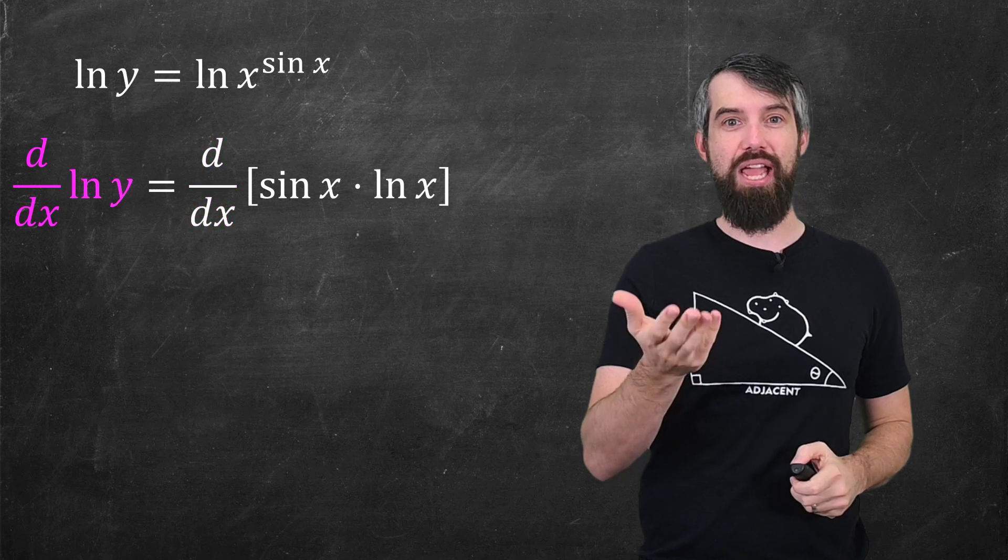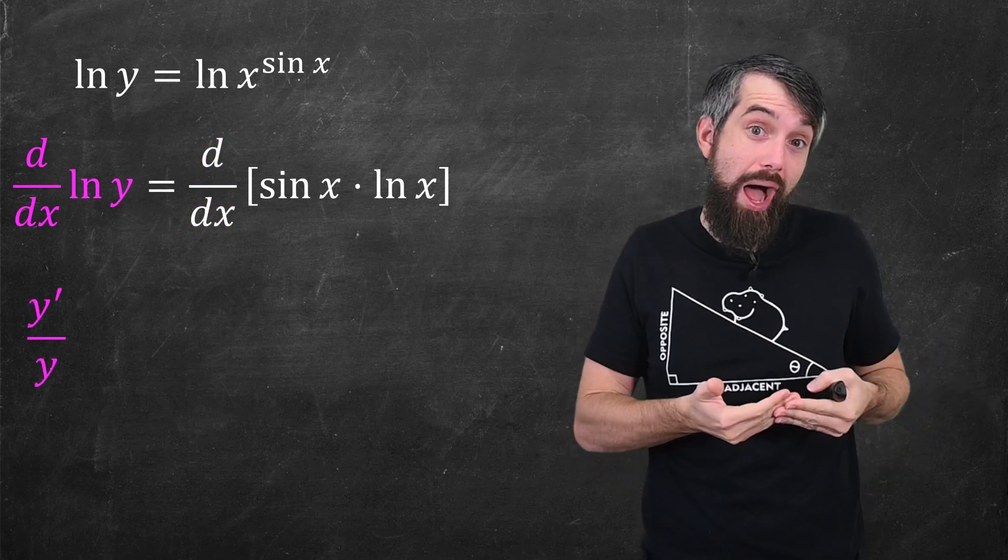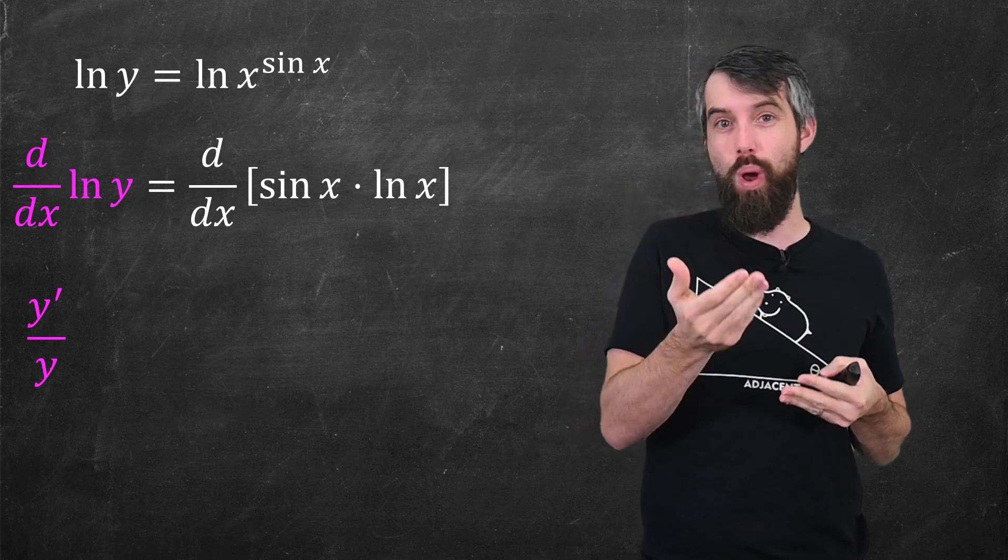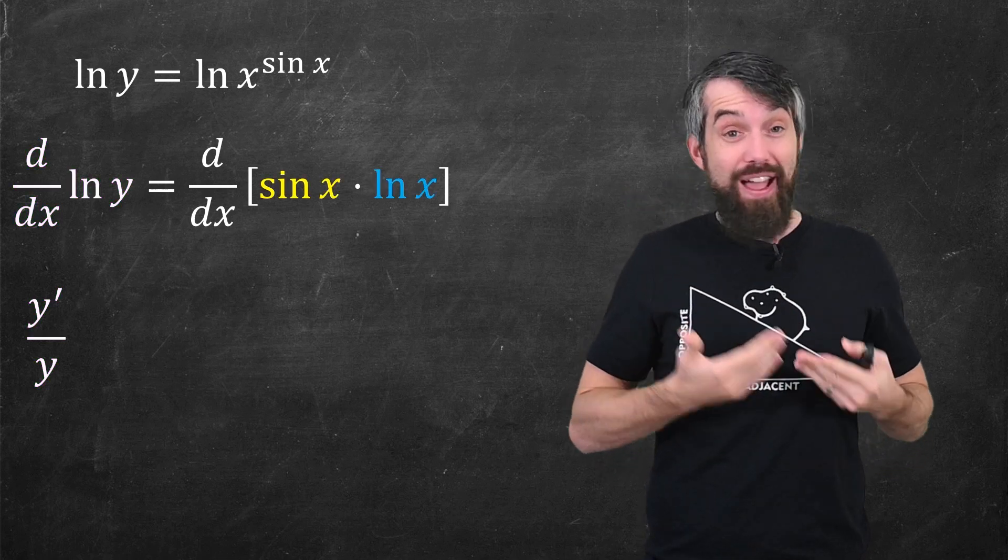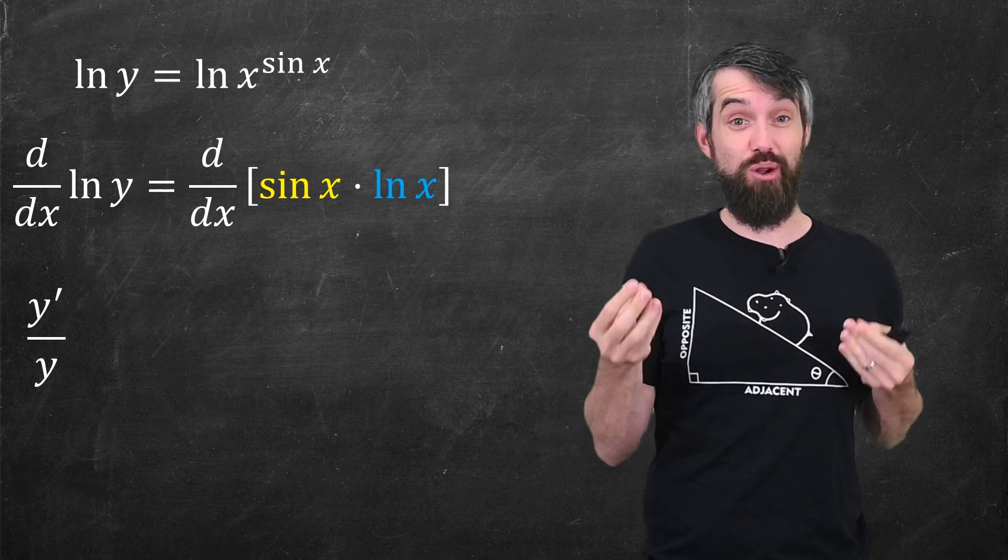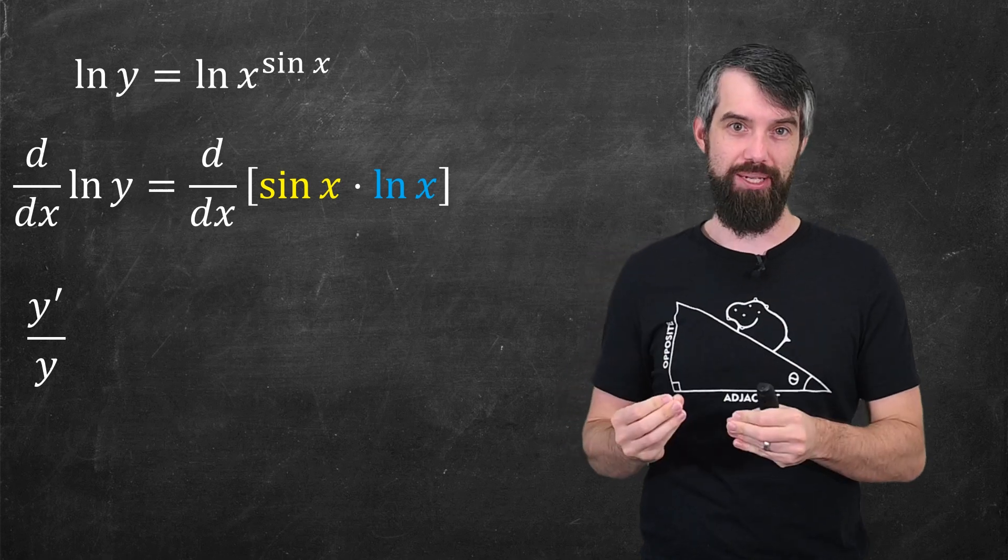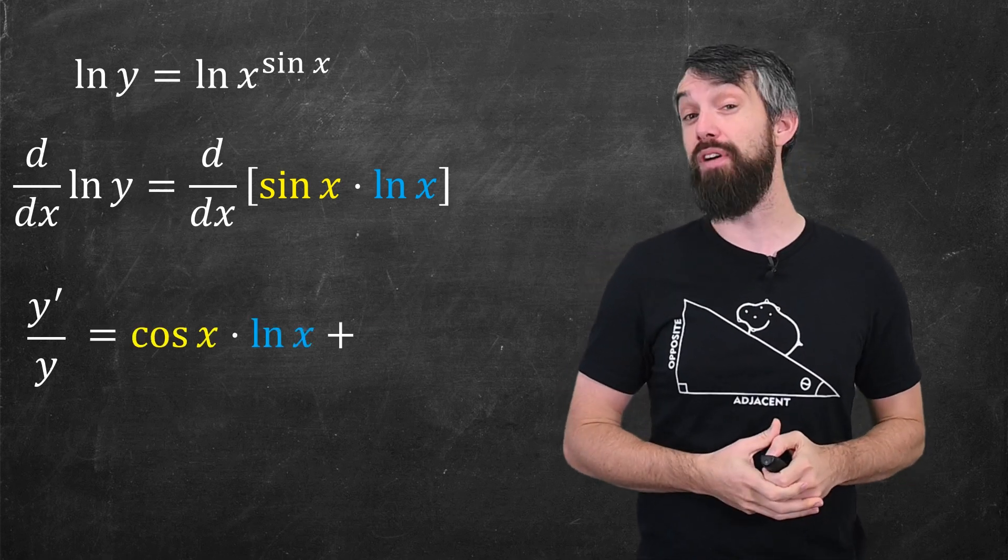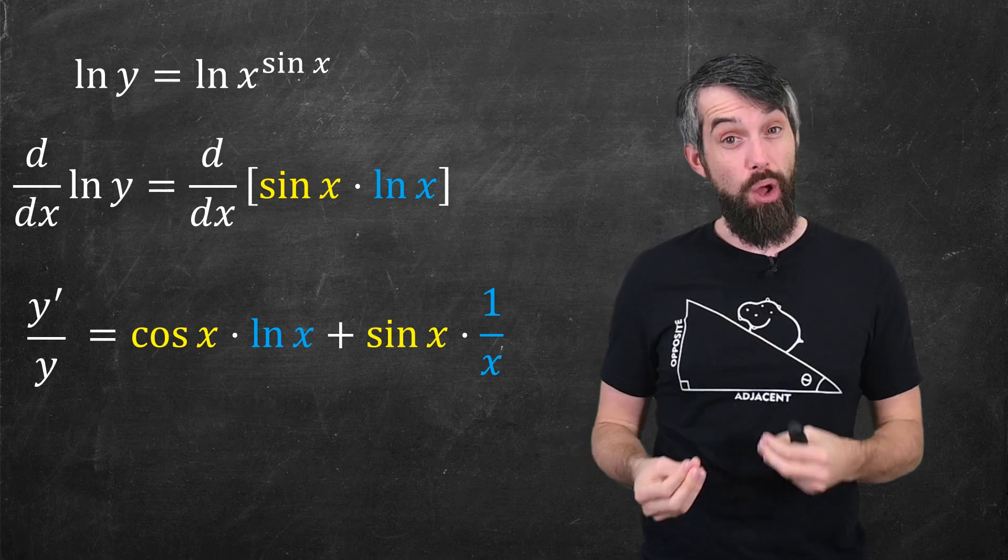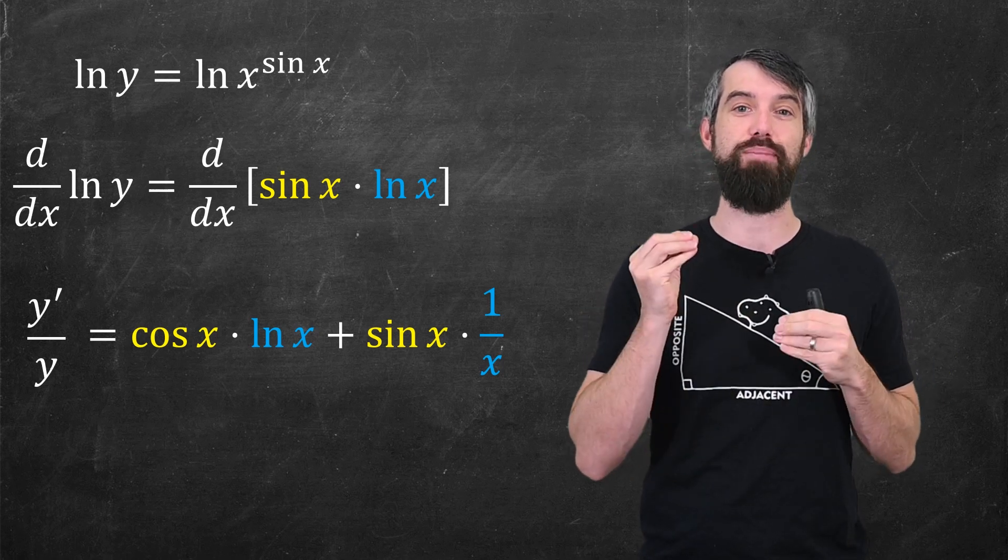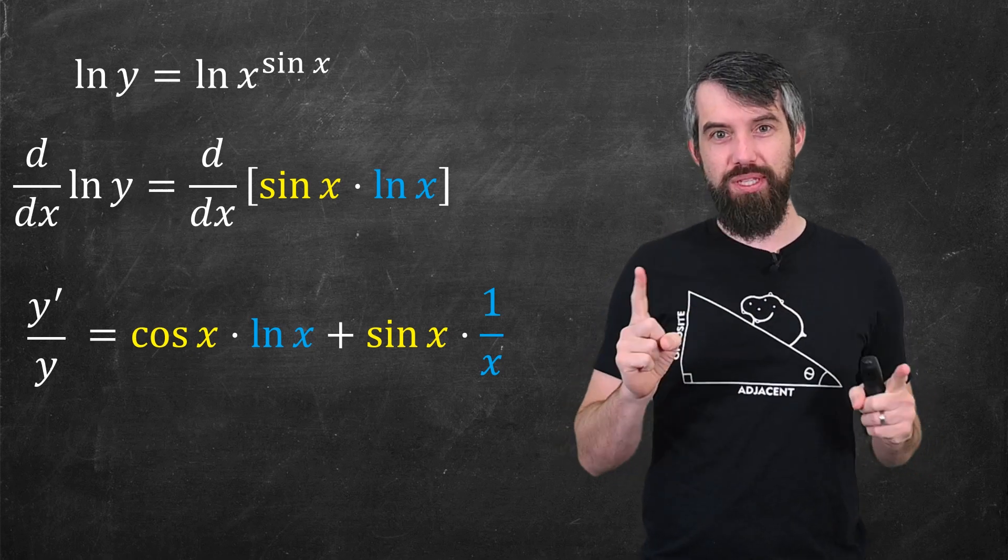So now I'm going to take the derivative of both sides. On the left hand side, the logarithm of y is just 1 over y, and then via chain rule times y prime. But notice what's happened on the right side. The fact that we used that logarithmic rule to bring down the exponent means now I'm taking the derivative of a product. And I know how to take the derivative of a product via product rule, cosine of x times logarithm x plus sine of x times 1 over x.